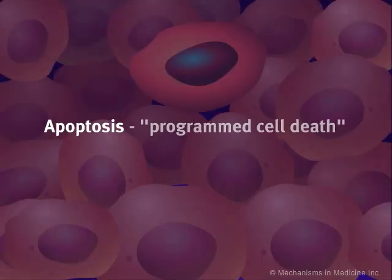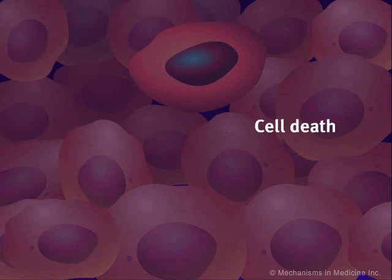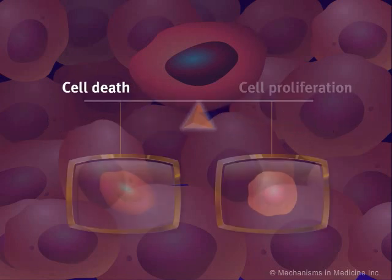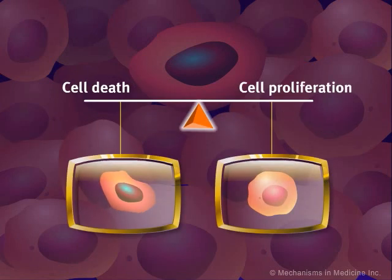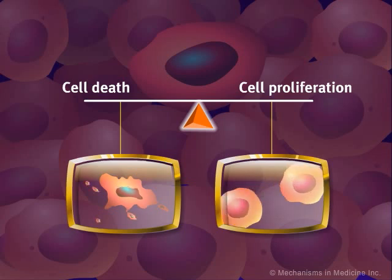Apoptosis, or programmed cell death, is one of the mechanisms by which organisms limit the growth and replication of cells. If apoptosis did not occur, there would be no way to control cell growth and tissue homeostasis would be lost.